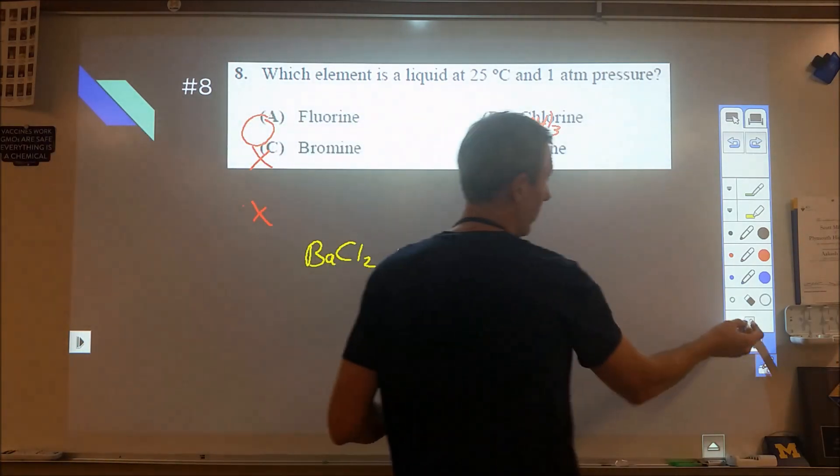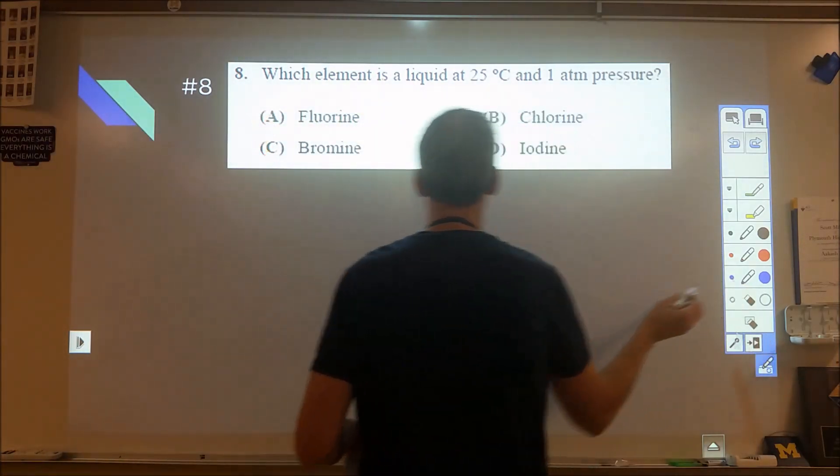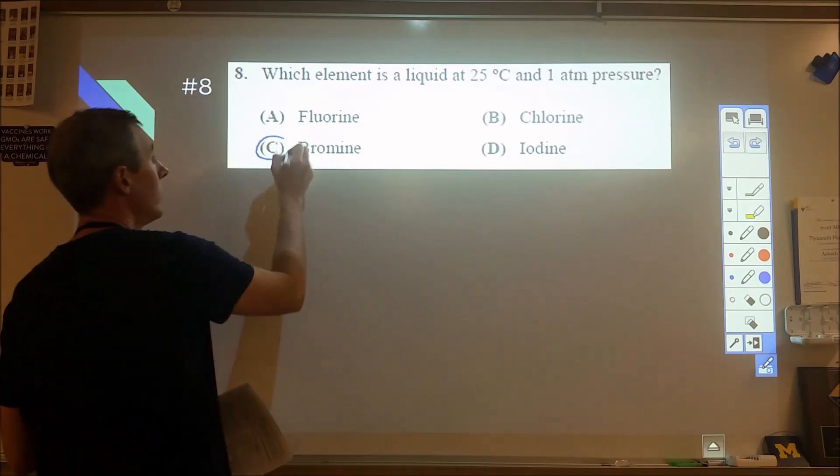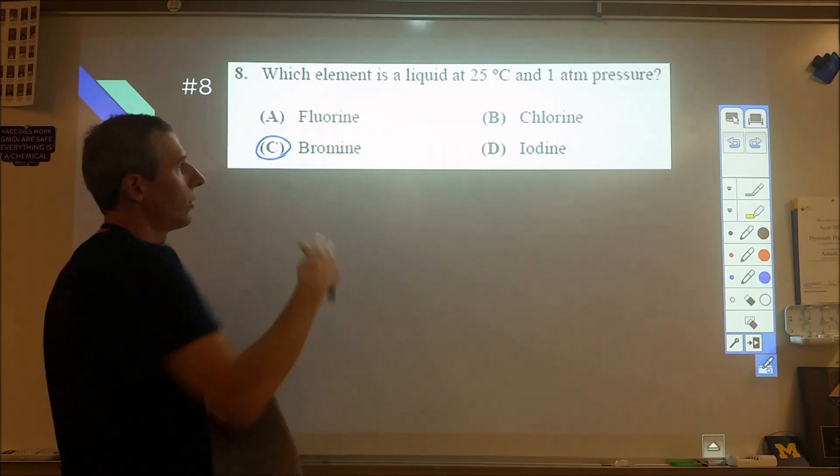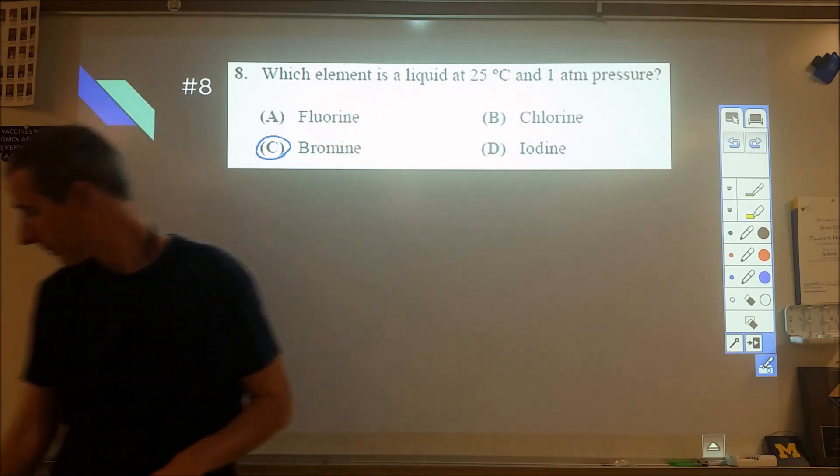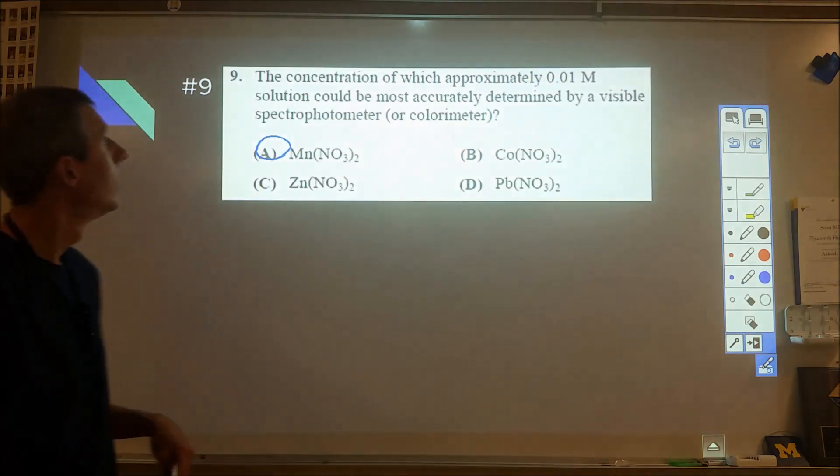Which element is a liquid? That would be bromine. It's the orange liquid. Chlorine is a gas, iodine is a solid, and chlorine of course is a gas.